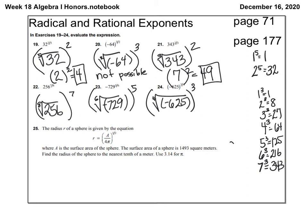The eighth root of 256: 2 to the fifth is 32, 2 to the sixth is 64, 2 to the seventh is 128, 2 to the eighth is 256. So the eighth root of 256 is 2. And 2 to the seventh power is 128.